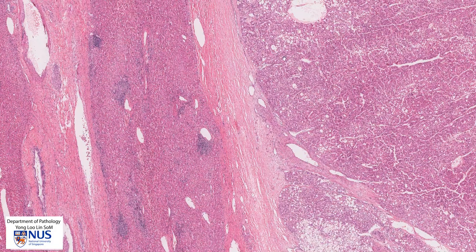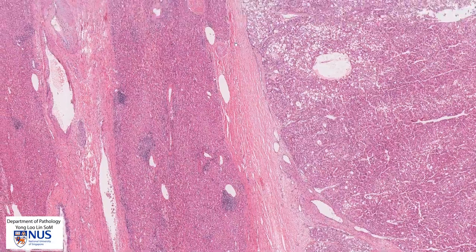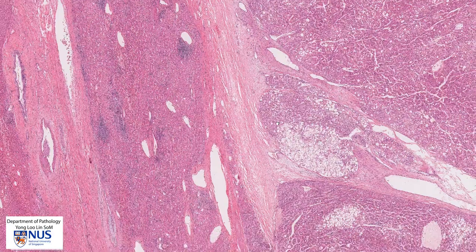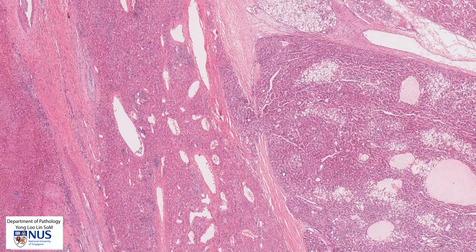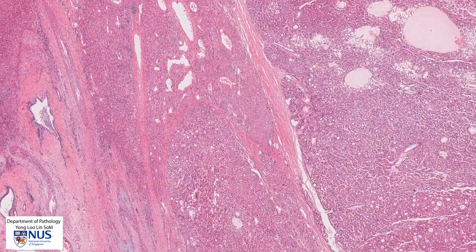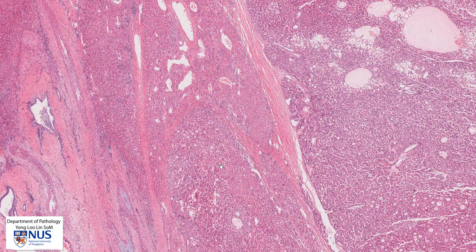Here is where the tumor starts. In this area, there is a fibrous capsule that separates the tumor from the non-neoplastic liver. However, if we follow this tumor downwards, we can see that the tumor is no longer delineated from the normal liver by a capsule. Over here, this is tumor, this is normal liver, and there is no capsule here. So some HCCs may actually have a partial fibrous capsule.